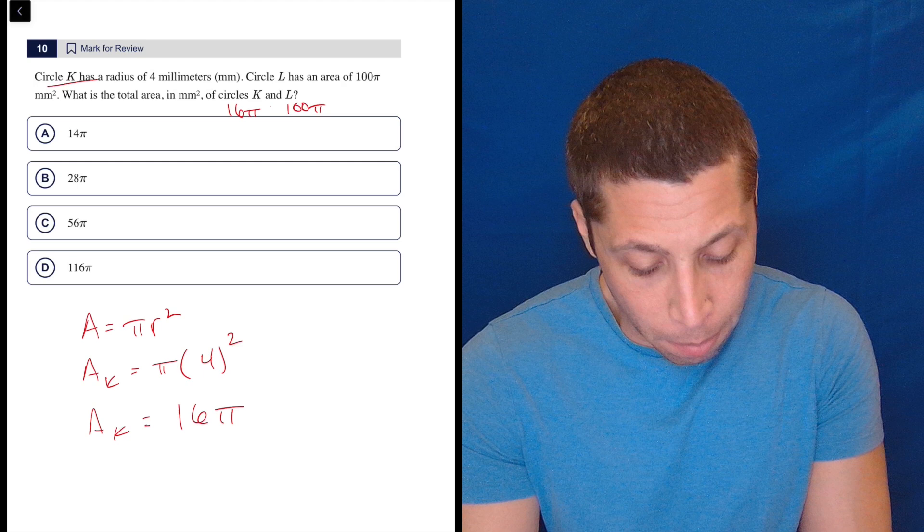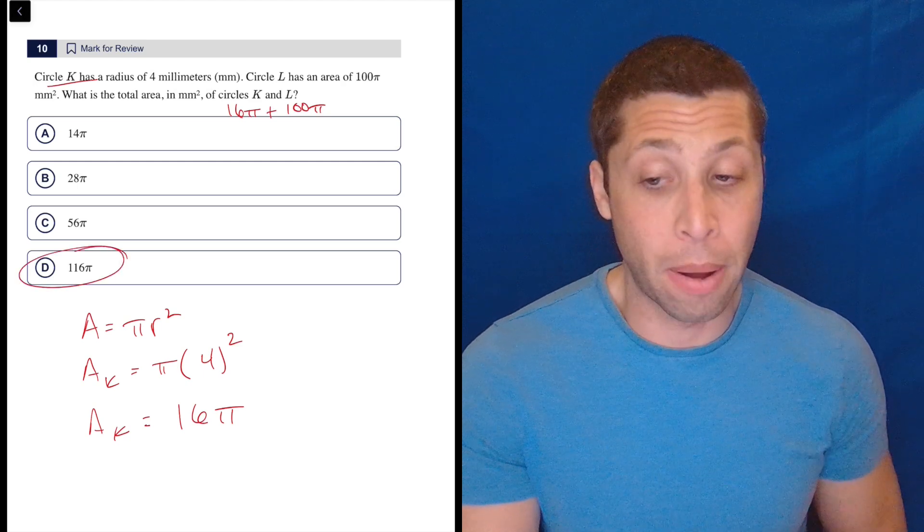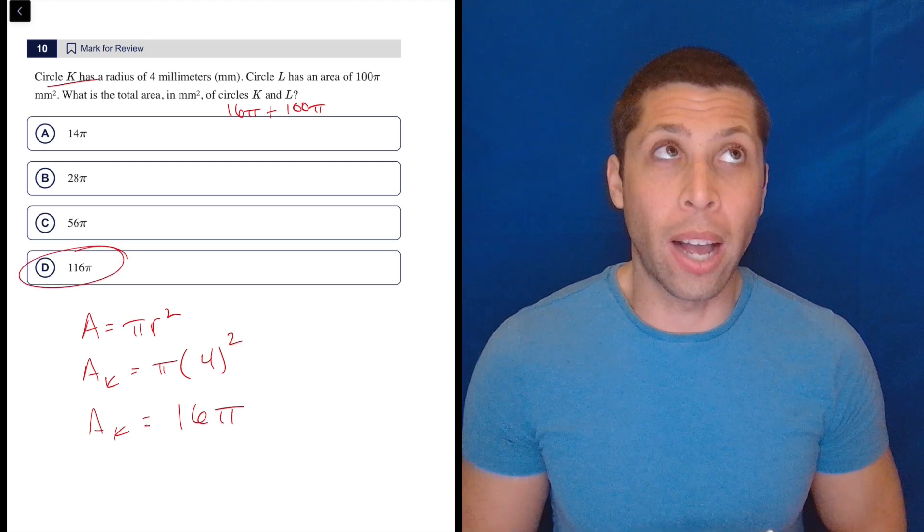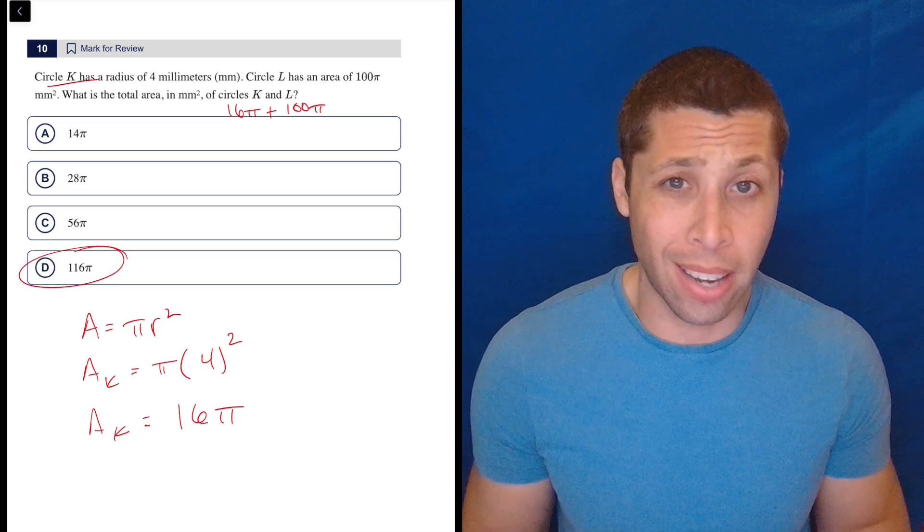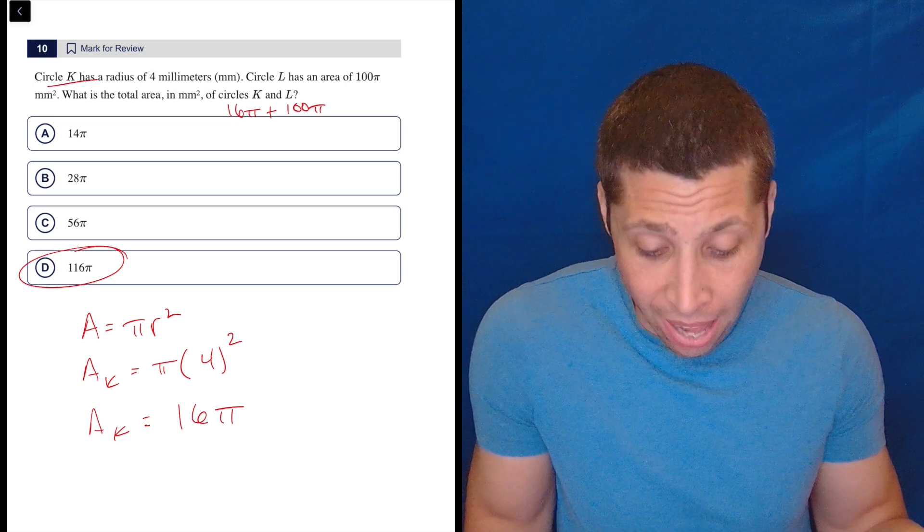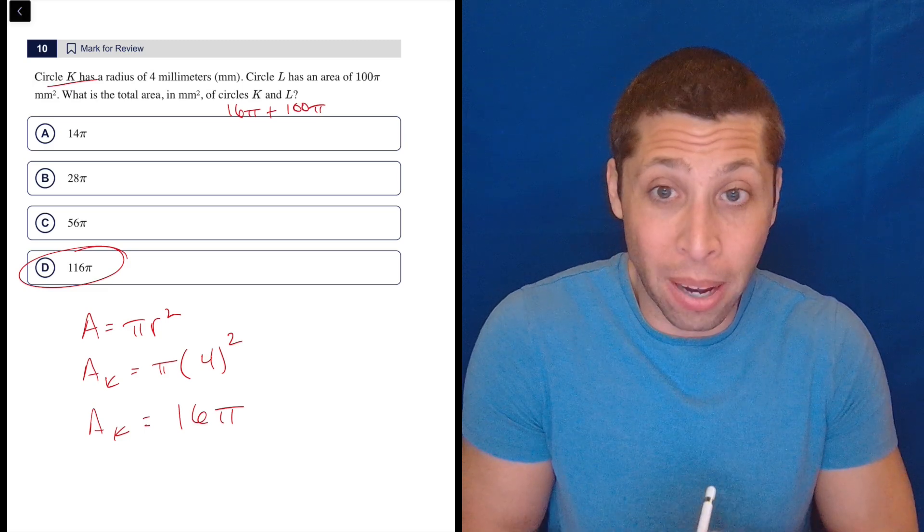So 16π plus 100π is 116π. That's it. That's the whole question. There's nothing weird here. I guess the only thing is, why are they asking us to add these two areas together just to mess with you? I'm actually surprised 16π isn't an answer.